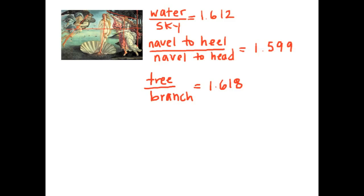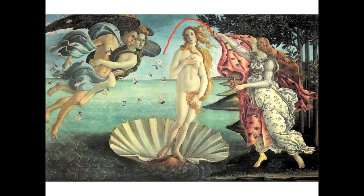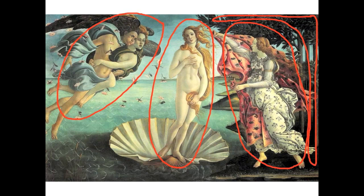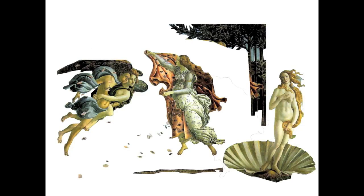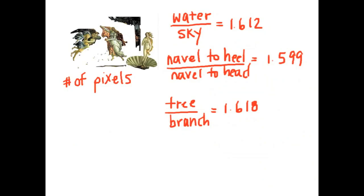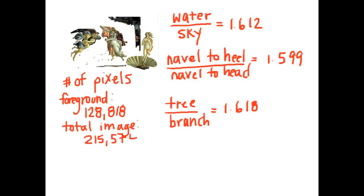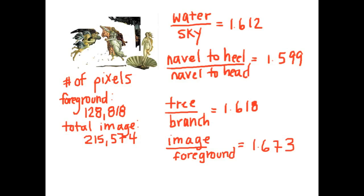Then we thought it'd be really impressive if Botticelli somehow had the ratio of the figures in the foreground to the ratio of the whole painting be the golden ratio as well. To figure this out, we imported a proportionally accurate image of the painting into Photoshop and used the lasso tool to remove the images in the foreground — we removed Venus, Zephyrus, both Floras, the trees, and some of the flowers — and asked Photoshop to calculate the number of pixels. We found A equal to 128,818. We then divided that number into the number of total pixels in the image, 215,574, and arrived at 1.673. Pretty darn close to phi, and the difference could be our ineptitude with Photoshop. I trust Botticelli a little more than I trust myself.